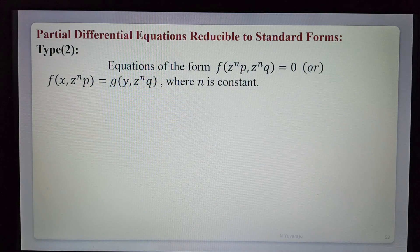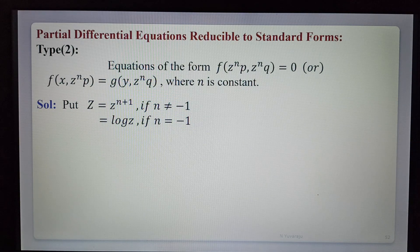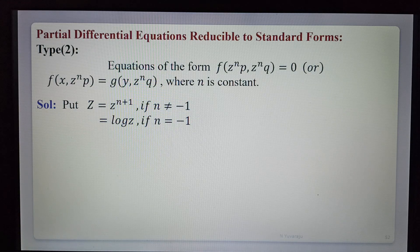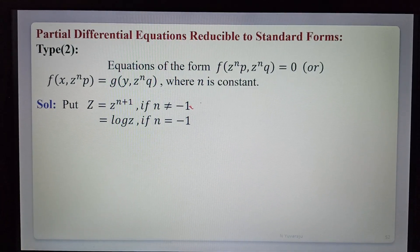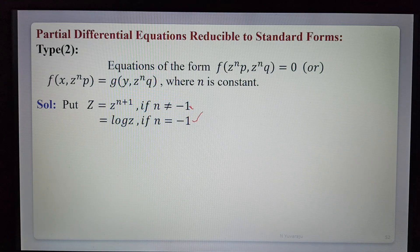To convert to standard form, in the given equation we substitute capital Z for small z. Capital Z equals z^(n+1) when n is not equal to minus 1, and capital Z equals log z when n equals minus 1. So for n not equal to minus 1, we substitute capital Z = z^(n+1), and for n equal to minus 1, capital Z = log z.